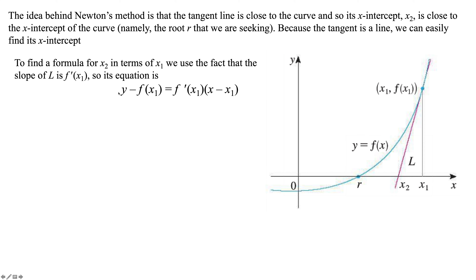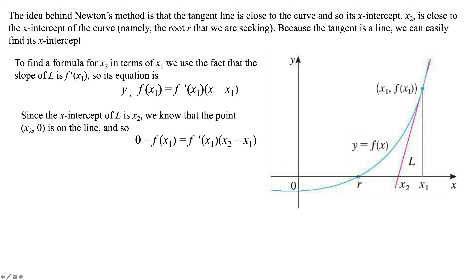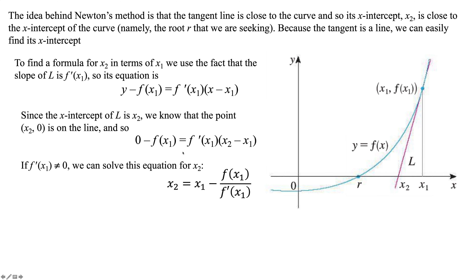Here's the concept: the linear approximation formula is y minus f(x sub 1) equals f'(x sub 1) times (x minus x sub 1) — that's your point-slope formula. If we solve this by putting zero in for y, we get: x sub 2 equals x sub 1 minus f(x sub 1) over f'(x sub 1). Make sure f'(x sub 1) doesn't equal zero because it's in the denominator.